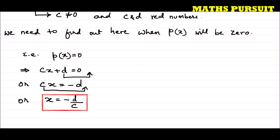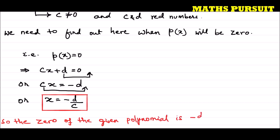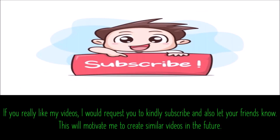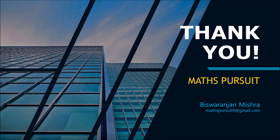So the zero of the given polynomial is −d/c. You need to write this as your concluding answer. This is very simple and straightforward. If you have any questions or doubts, please reach out to me in the comment section and I will get back to you. If you like my videos, please subscribe and let your friends know — this will motivate me to create similar videos in the future. Thank you. Bye.